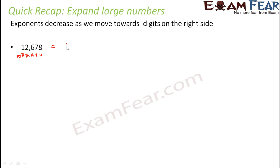So this can be written as 1×10⁴ + 2×10³ + 6×10² + 7×10¹ + 8×10⁰. So what do we see? As we move towards the digits on the right hand side, the value of the exponents gradually decrease.